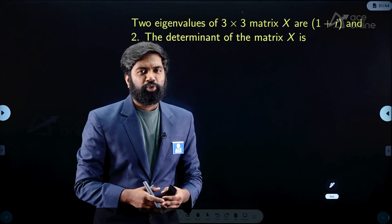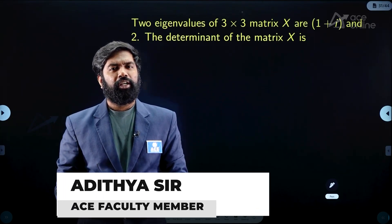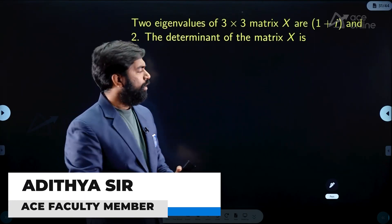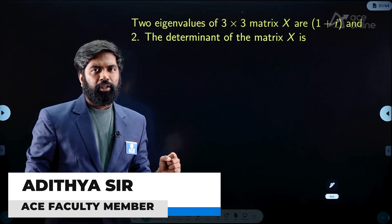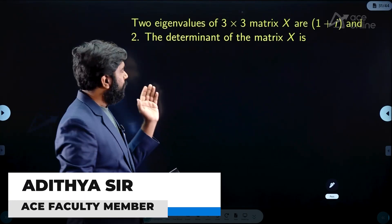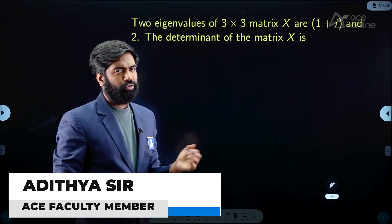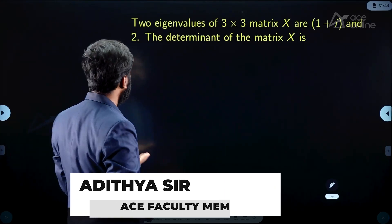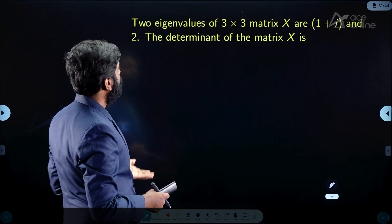We are now going to solve questions from linear algebra that were given in the sample question paper from DA paper by ISE. Let us look at the questions: two eigenvalues of a 3×3 matrix are 1+i and 2, the determinant of the matrix X is dash.